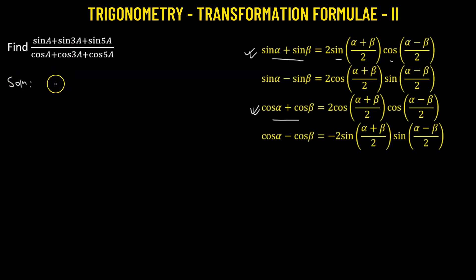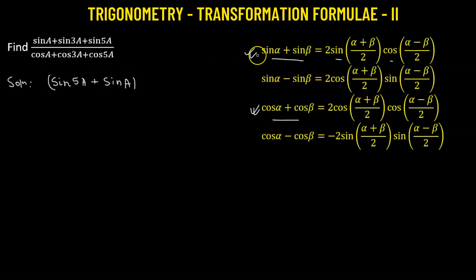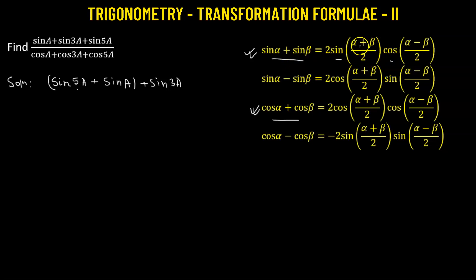We will rearrange the terms in the numerator. We will take sine of angle 5a and add it to sine of angle a. This will be one sum where we apply the transformation formula, and we'll keep sine of 3a aside. The reason is that when summing two sines, the formula involves the sum of angles divided by two. If we add 5a with a, we get 6a, and half of that equals 3a, which helps us take a common factor.